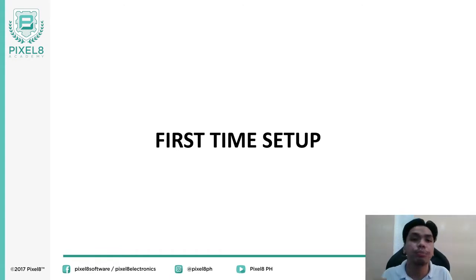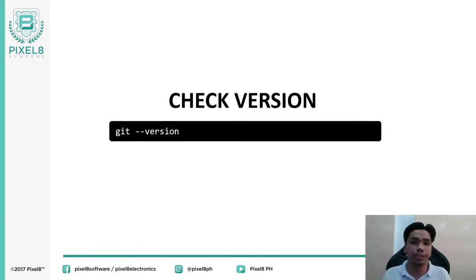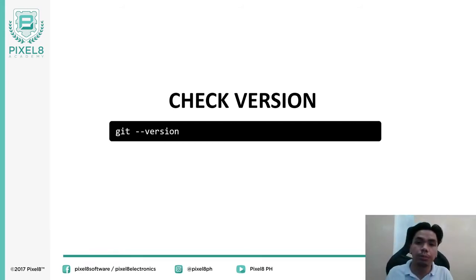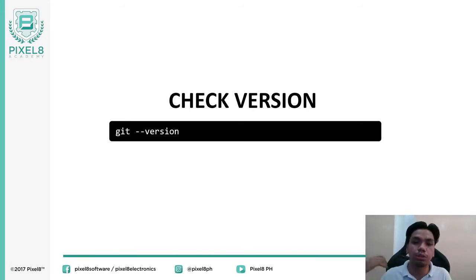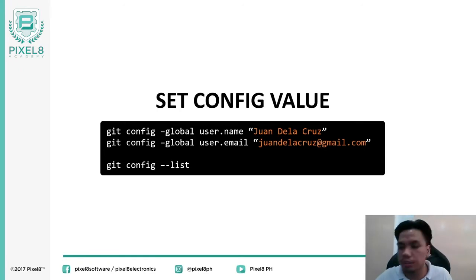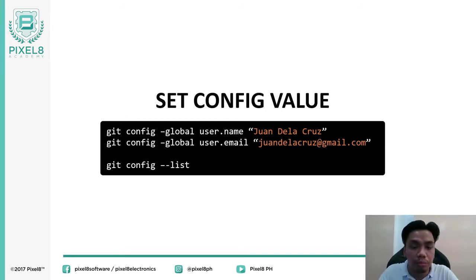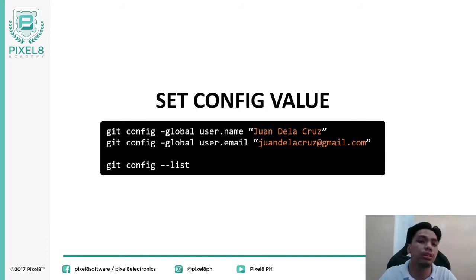Once Git is installed, you need to set up your Git instance. First, you're going to check the version. Git's behavior differs between versions, so we recommend checking your version to find the correct documentation. Next, you're going to set your configuration values — specifically your name and email — because Git uses these to identify who created and pushed a commit.